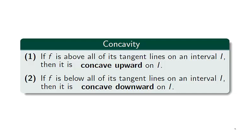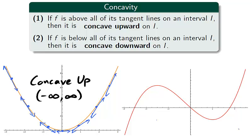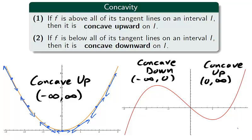An interval has upward concavity if the function lies above the tangent lines of points on that interval. An interval has downward concavity if the function is below the tangent lines of points on that interval. The parabola y = x² is concave upwards on the entire real line — notice how it lies above the tangent line no matter what point we choose. The red function is concave down on the interval (−∞, 0) and concave up on (0, ∞), lying below the tangent lines on the former and above on the latter.